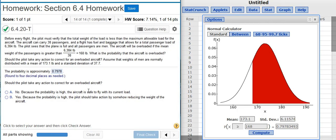Now, the second part of this problem asks, should the pilot take any action to correct for an overloaded aircraft? Well, look at our probability. Almost 80%. That's pretty high probability. Not an absolute certainty. I mean, there's a 20% chance that you're going to be okay, but only a 20% chance?